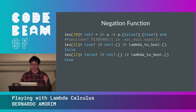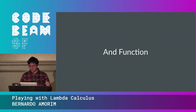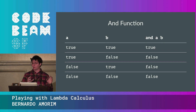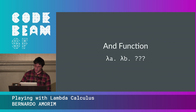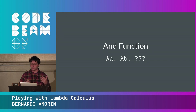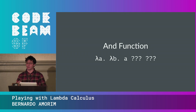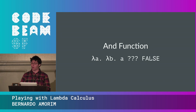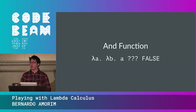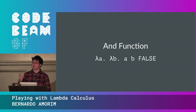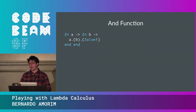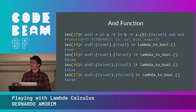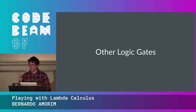Let's try something more complex: an AND function. AND receives two booleans and returns true only if both are true. AND short-circuits on false — if 'a' is false, the result is false regardless. So we apply 'a' with 'b' as the first argument and 'false' as the second. If 'a' is true it picks 'b'; if 'a' is false it picks false. Implementing in the shell confirms: AND(true, true) is true, all other combinations are false.